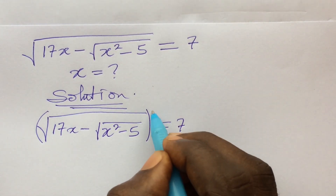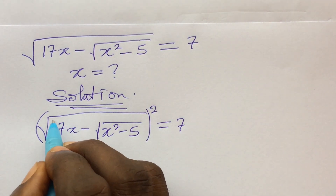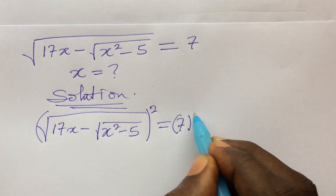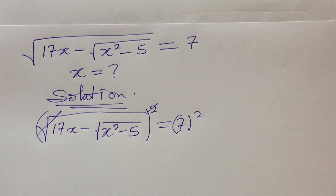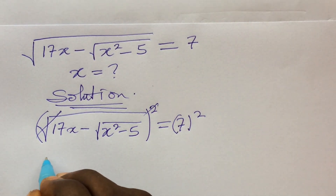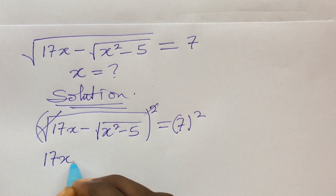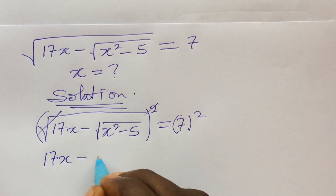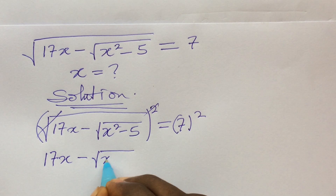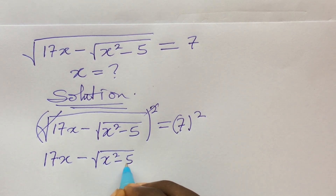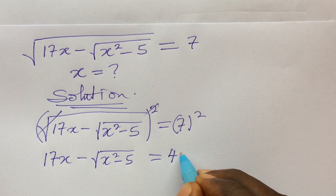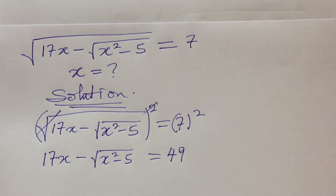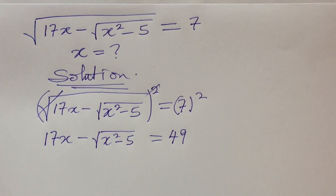We take the square of both sides, so this radical goes with this square. We are now left with 17x minus the square root of x squared minus 5, equal to 7 squared, which gives us 49. Easy as ABC — so we proceed.